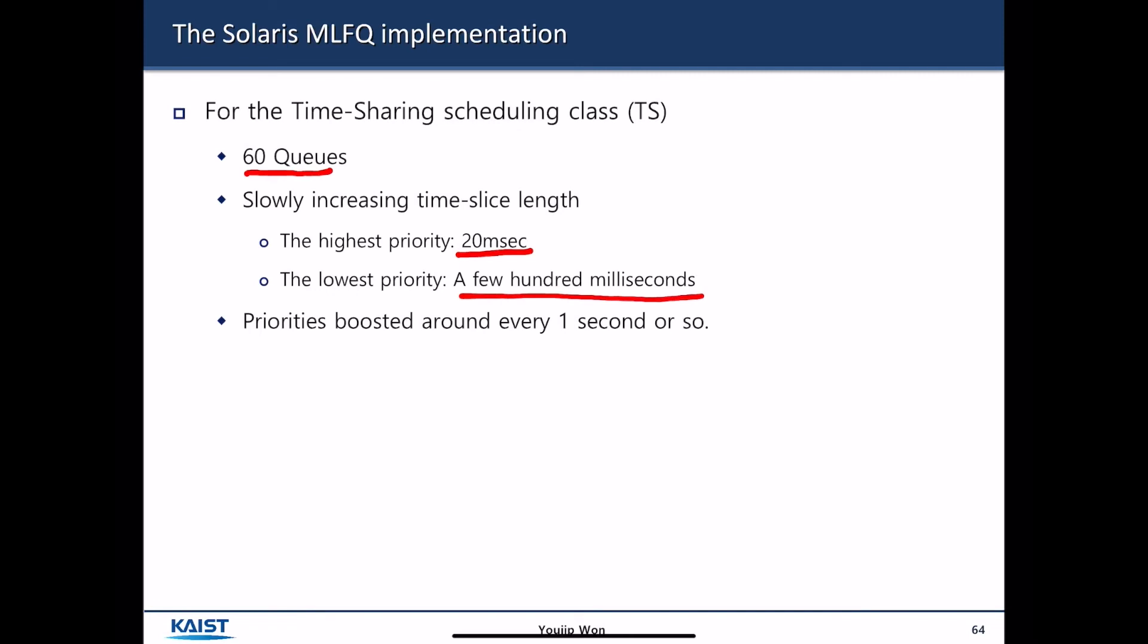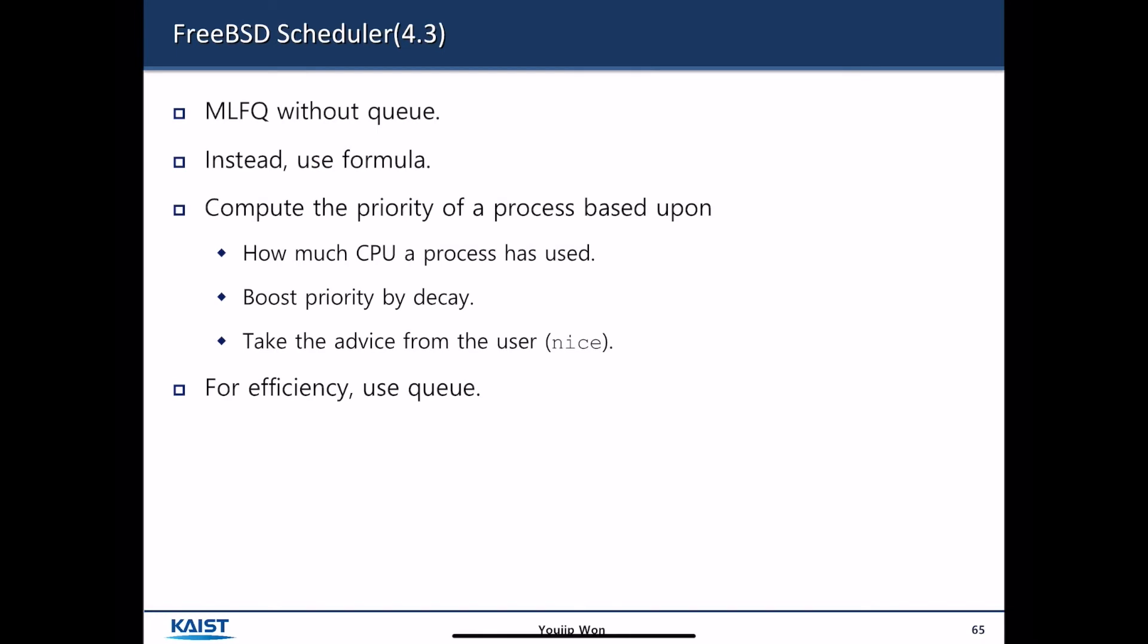Priority of a job is boosted around every one second or so. FreeBSD scheduler is another way of implementing MLFQ. But this is an interesting implementation because FreeBSD scheduler implements MLFQ without the actual queue. Instead, it uses an equation. It computes the priority of a process based upon how much CPU a process has used, same as in MLFQ. It boosts the priority by decay and also takes the user's intention to yield CPU to other processes. But still, for efficiency, it uses queues. In our Pintos project, we are going to implement FreeBSD scheduler in detail. Details will be shown later in the later part of the class.